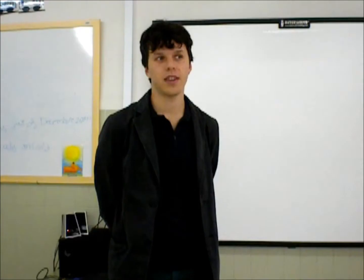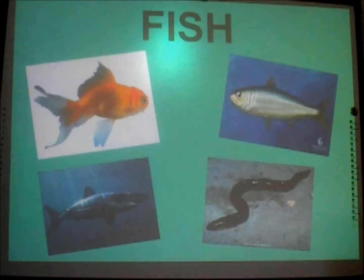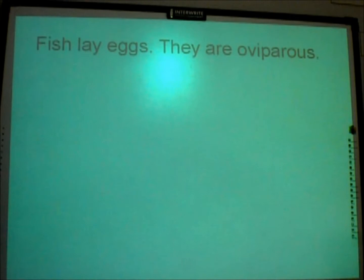An ant is an insect. A butterfly is an insect. Give me three characteristics of fish. Give me two examples. Fish lay eggs.